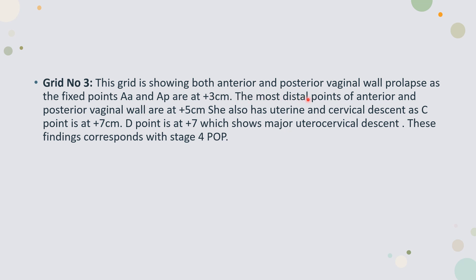Grid 3 answer: This grid shows both anterior and posterior vaginal wall prolapse — fixed points Aa and Ap are at plus 3, and the most distal points Ba and Bp are at plus 5. She also has uterine and cervical descent as C and D are both at plus 7, indicating major utero-cervical descent. These findings correspond with Stage 4, because any point beyond plus 6 centimeters (TVL minus 3) falls into Stage 4 — here C and D are at plus 7.